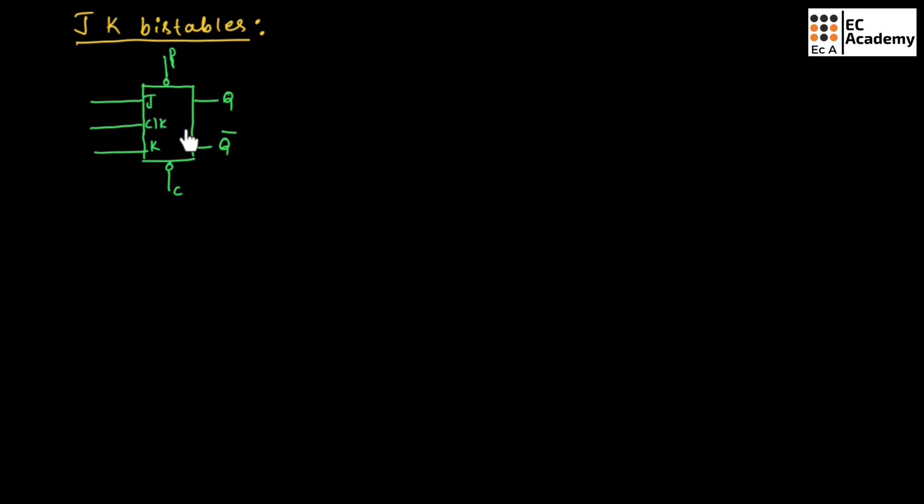This block diagram represents the JK bistable. In this block diagram, you can observe we are having two inputs which is J and K. Along with this, we are having a clock signal, and we are having two more control signals, also known as direct inputs, which is preset and clear.